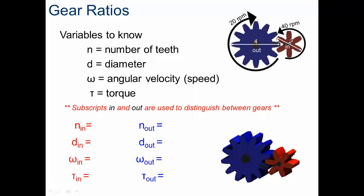D stands for the diameter, so it's end to end of the gear, just as if it were a wheel. This symbol right here is known as the Greek letter omega, and that stands for your angular velocity or your speed.